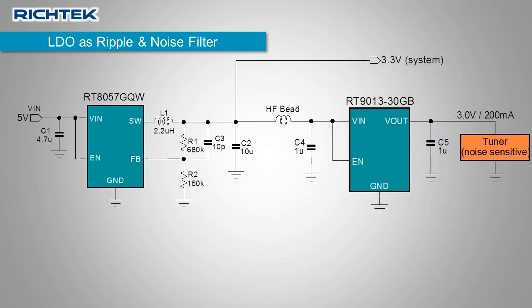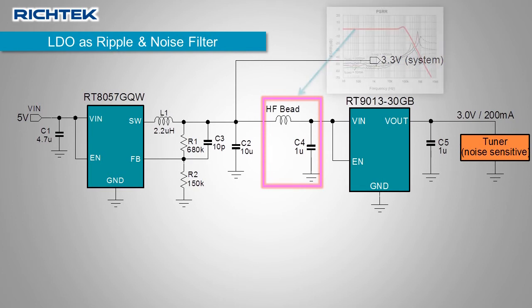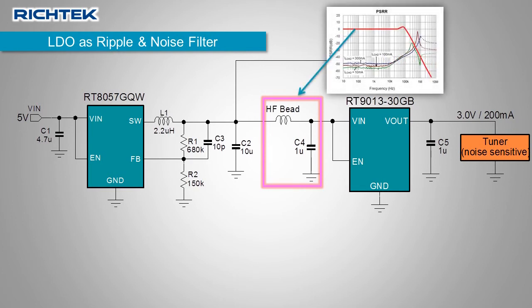A good solution is to add a small high-frequency bead before the LDO. The high-frequency bead, together with the LDO ceramic input capacitor, will form a nice 40 dB per decade high-frequency filter in the area where the LDO has some limitations.